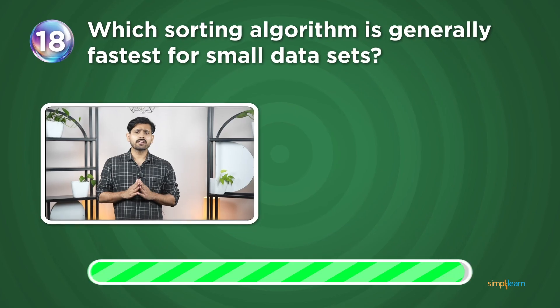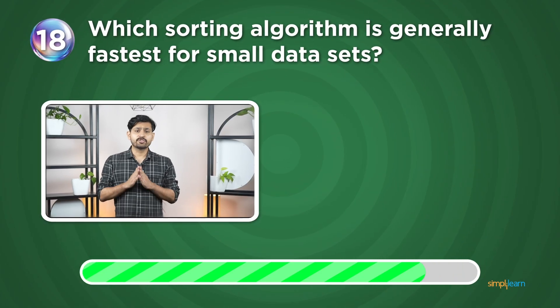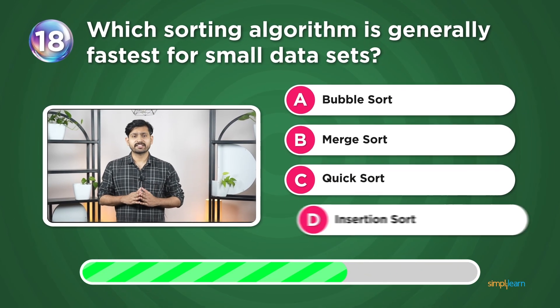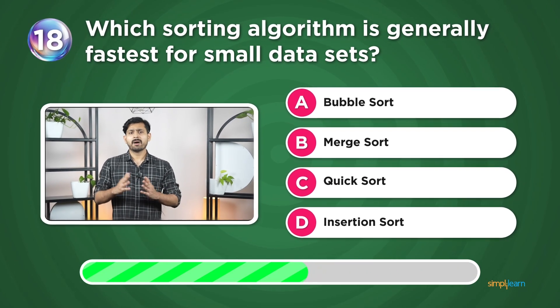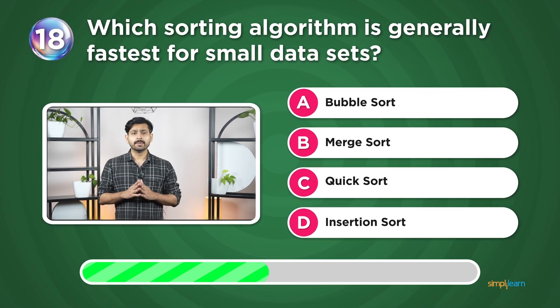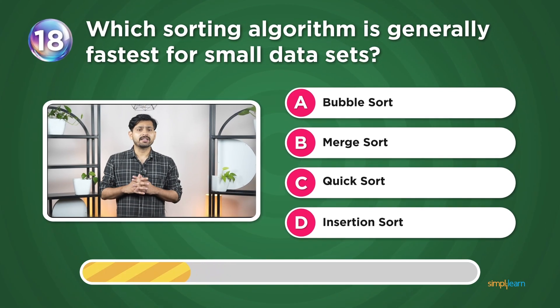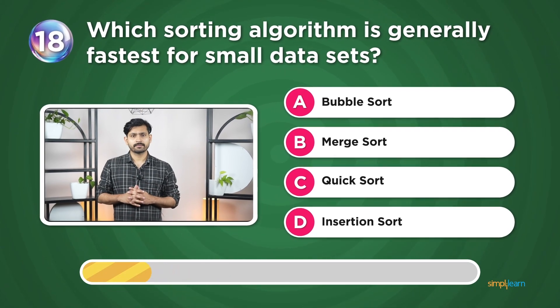Question 18: Which sorting algorithm is generally fastest for small data sets? Bubble sort, merge sort, quick sort, or insertion sort?